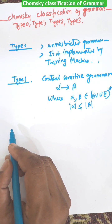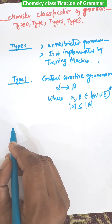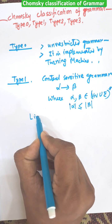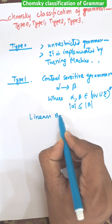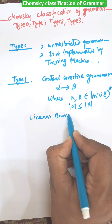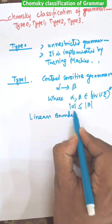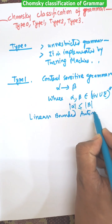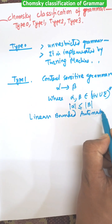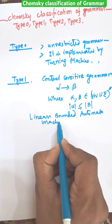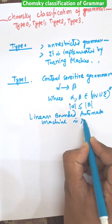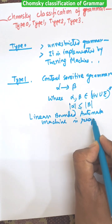This one is known as Type 1 grammar, and Type 1 grammar is implemented by a Linear Bounded Automata machine.